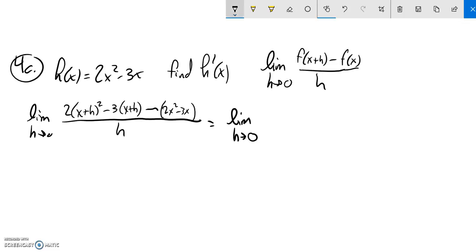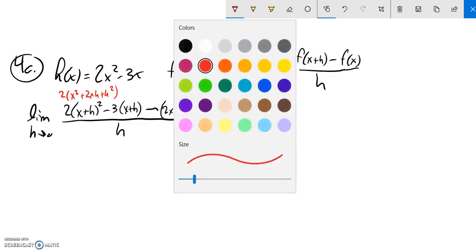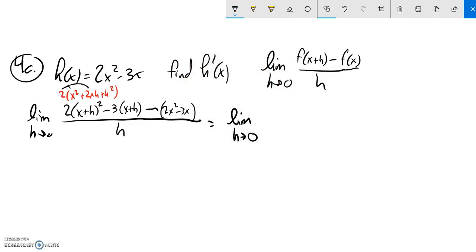So let me do a little bit of scratch work up above. x plus h squared, that's x plus h times x plus h. So that's x squared plus 2xh plus h squared. And if I distribute that 2 into there, that gives me 2x squared plus 4xh plus 2h squared. Distribute that negative 3 into there, minus 3x minus 3h.